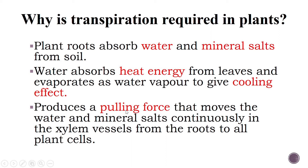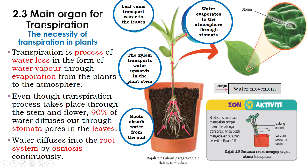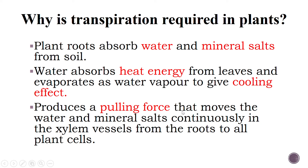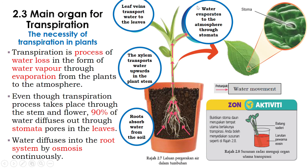Transpiration produces a pulling force — imagine that the water below is being pulled upward by a force from above. This pulling force is able to move water and mineral salts continuously through the xylem vessels from the roots to all the plant cells. Movement against gravitational pull is made possible because of this transpiration-driven pulling force.